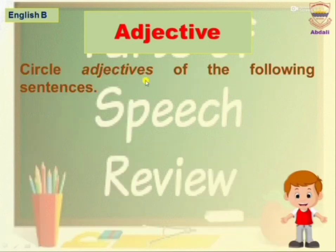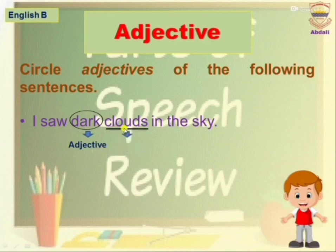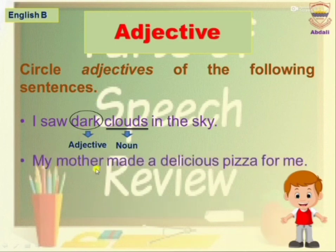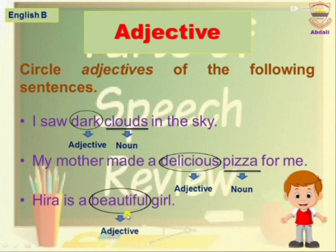Circle the adjective in the following sentences. I saw dark clouds in the sky. In this sentence, dark is the adjective and clouds is the noun, so dark describes the quality of clouds. My mother made a delicious pizza for me. Here, delicious is the adjective and pizza is the noun, so delicious describes the quality of pizza. Hira is a beautiful girl. Here, beautiful is the adjective and girl is the noun, so beautiful describes the quality of a girl.